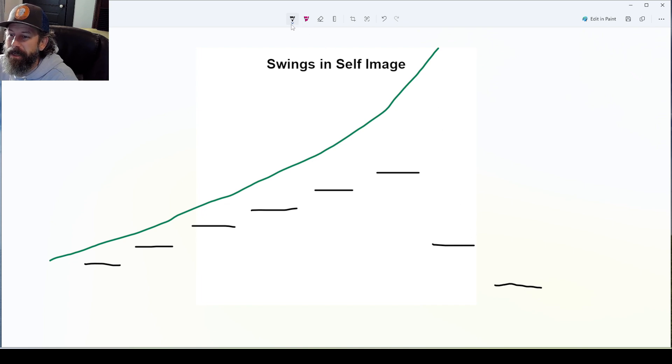And then what happens with my self-image is that all of a sudden, this thing doesn't just kind of level out. It just plummets, right? It's way down. And then I feel like, well, it's never going to happen. I'm never going to make it. How did I do this? What's wrong? What's wrong with me?